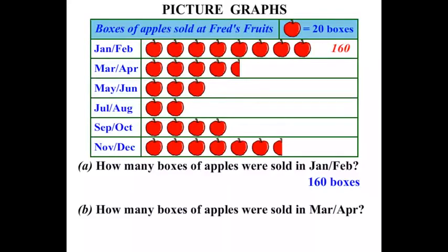Part B: how many boxes of apples were sold in March-April? Each apple is worth 20 boxes, but you can see that we haven't got a full apple — we've got half an apple. So if a whole apple is worth 20 boxes, half an apple will be worth 10 boxes. Counting: 20, 40, 60, 80, and that half is worth 10 more. So 80 plus 10 is 90 boxes for the March-April period.